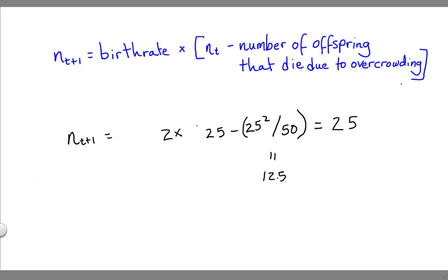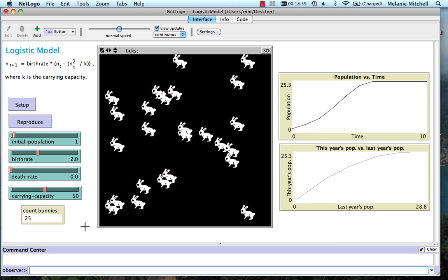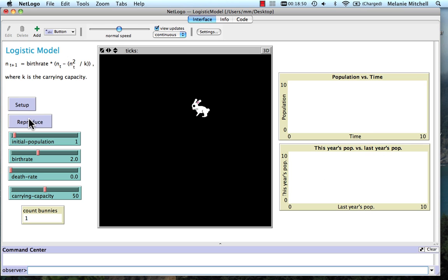Let's go back to the model. So our question is, is the whole the sum of the parts, as we saw it was in the linear model? Let's do what we did before. Run reproduce for three time steps. Here we get seven bunnies because of rounding off.